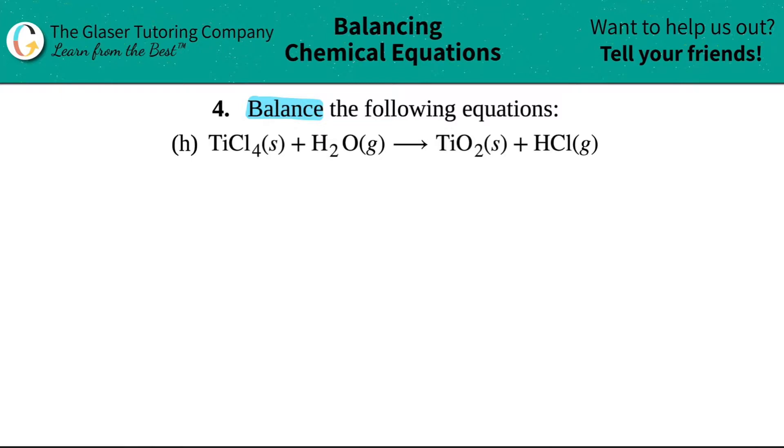So the first thing I'm going to do is I'm just going to rewrite this. I have TiCl4 plus H2O, and that will give me TiO2 plus HCl. And remember, when you're balancing, we do not need any of the states. So I don't care that this is a solid or a gas or a solid or a gas. So just pay no mind to those states.